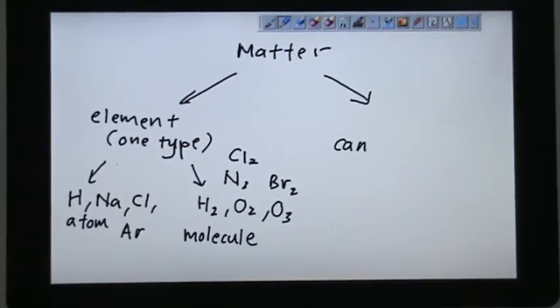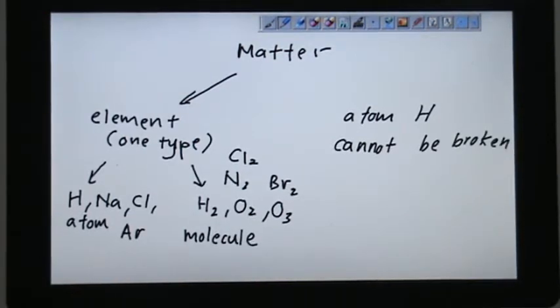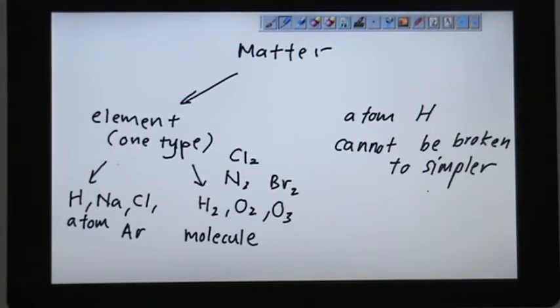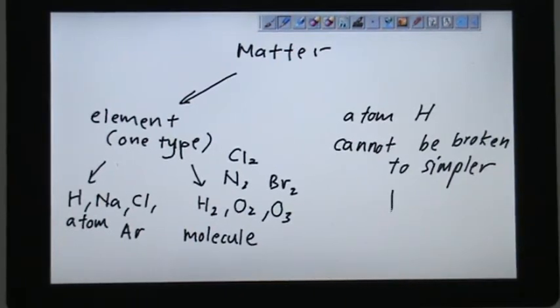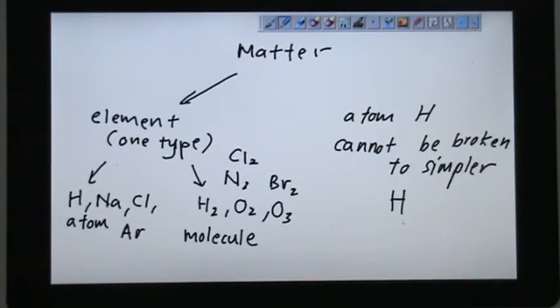And they cannot be broken down to a simpler substance. Example, atom H cannot be broken down to simpler substance. Of course, we can break them down to subatomic particles. But when they become subatomic particles, they do not have the characteristics of the atom hydrogen anymore. So they just simply exist as H. You cannot break them down to more components anymore.